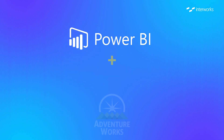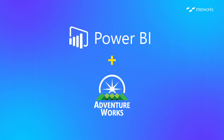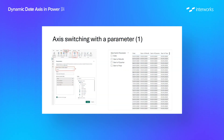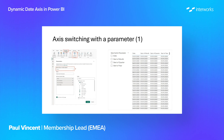Throughout the video I'm going to show building using the AdventureWorks dataset, so if you have that and want to build along you'll be able to use that. Let's start by looking at the standard functionality using a parameter. The parameter is going to switch the axis out in our view and change the data resolution for us. To build the parameter I go into the report view, select the modeling ribbon, and in there you'll find a button to create a new parameter — in this case selecting the option to create a parameter based on fields.